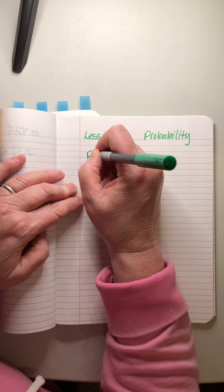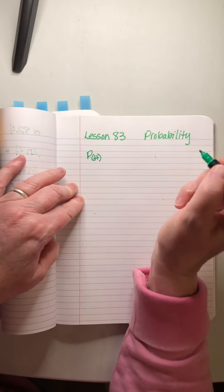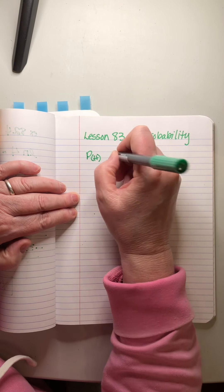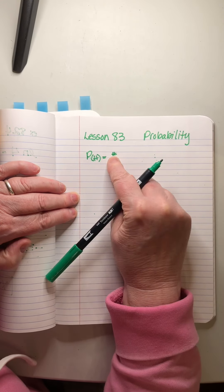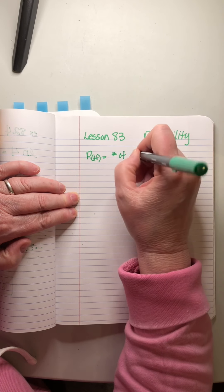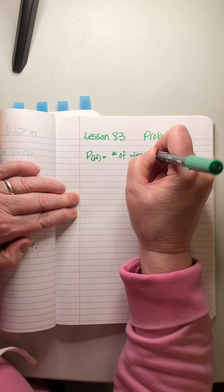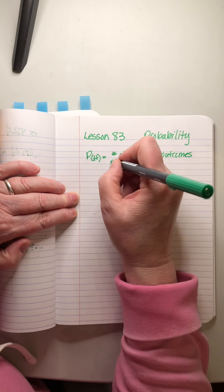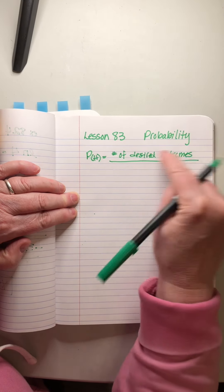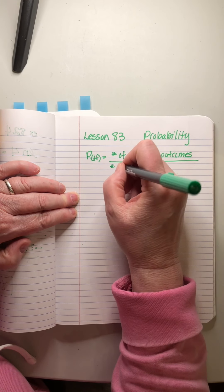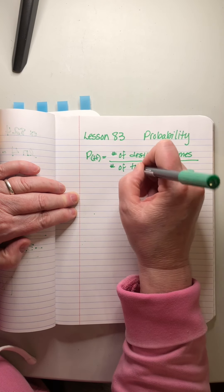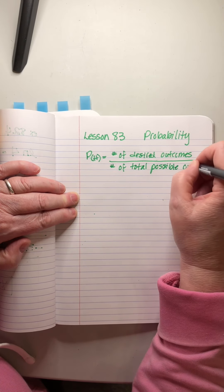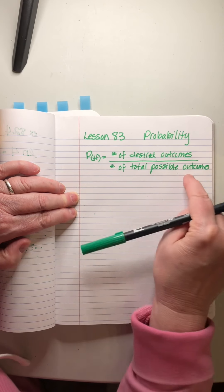Let's just kick back and enjoy probability. As you know, probability is determined as the probability of, say, heads being flipped in a coin is equal to the number—remember this from before, it was hashtag, it meant number—number of desired outcomes, like getting heads or rolling a three or whatever we want to have happen. We divide that by the number of total possible outcomes.